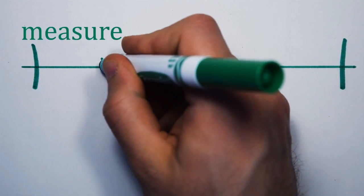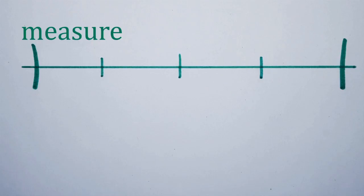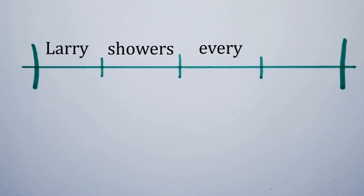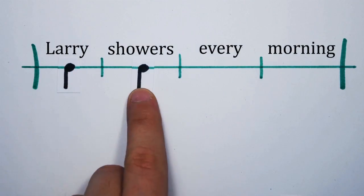We split the measure into four equal segments and each segment gets a word assigned to it. Larry showers every morning. Since each word takes up a quarter of the measure, we'll associate a quarter note to each word.